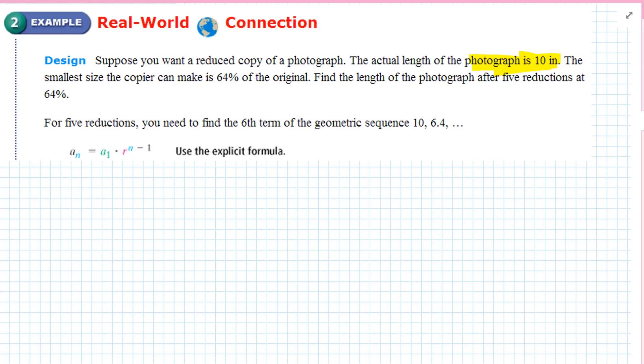Real world connection. Suppose you want to reduce a copy of a photograph. The actual length of the photograph is 10 inches. The smallest size the copier makes is 64% of the original. Find the length of the photograph after 5 reductions of 64%. We can say aN equals a1 times R to the n minus 1 power.